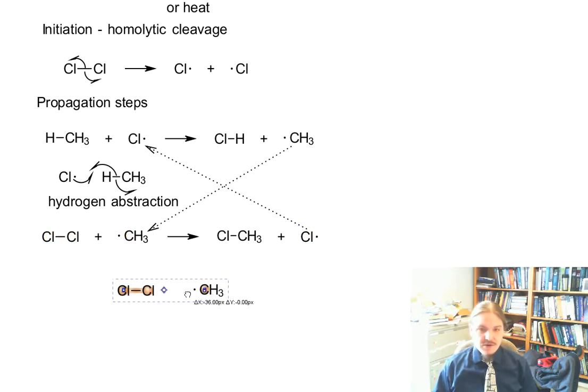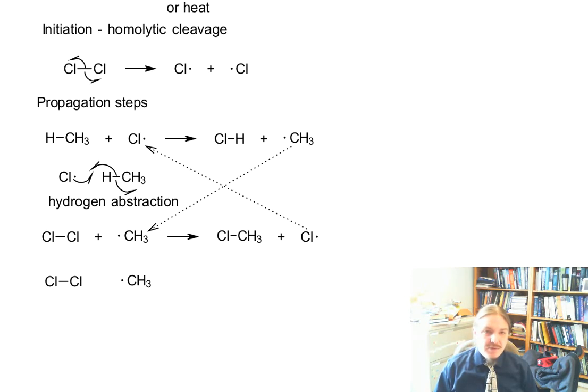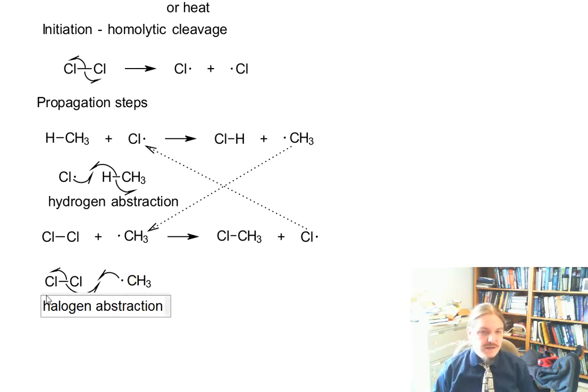And then just briefly, let's take a look at what the mechanism arrows here look like. Let me go get my radical arrow back. Now we have this halogen abstraction by the methyl radical. Chlorine-chlorine bond breaks, yielding a chlorine radical on chloromethane, halogen abstraction.